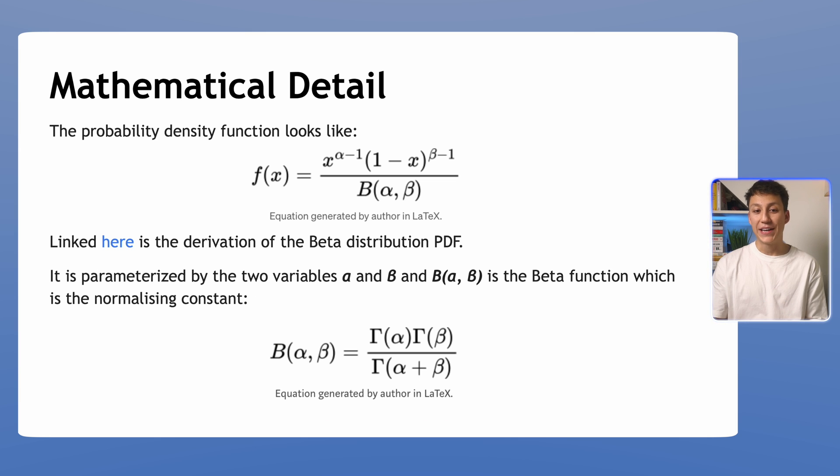The mathematical details behind the beta distribution is this: its PDF looks like this format here where the denominator is something known as the beta function, and the beta function is composed of several gamma functions. So we've got a function inside a function, a bit confusing, but you don't need to worry too much about it. All you need to know is that alpha is basically the number of successes we have in the outcome and beta is the number of failures we have in the outcome. Again we'll apply this theory in a second to make it more concrete.